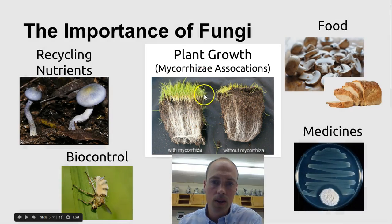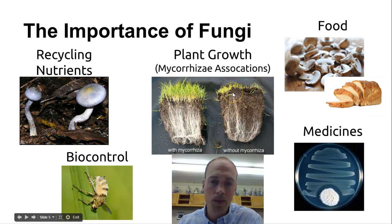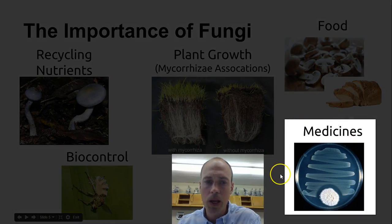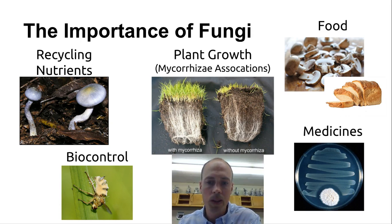Mycorrhiza is a kind of fungus that helps roots find water and find nutrients from the soil. You can see how plant growth is affected by that association. Without that fungus there, even grass is not growing very well in otherwise nutrient-rich soil. Fungi also gives us medicine. Penicillin, the first antibiotic used by humans to kill bacteria, is actually a type of mold, which is a type of fungus.